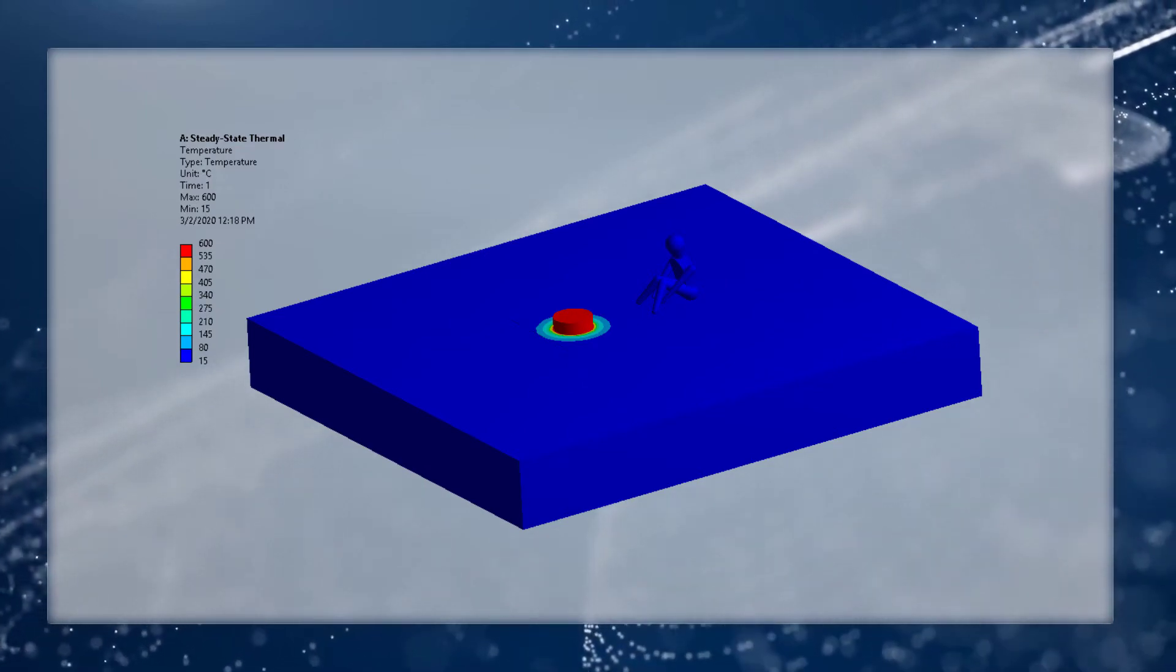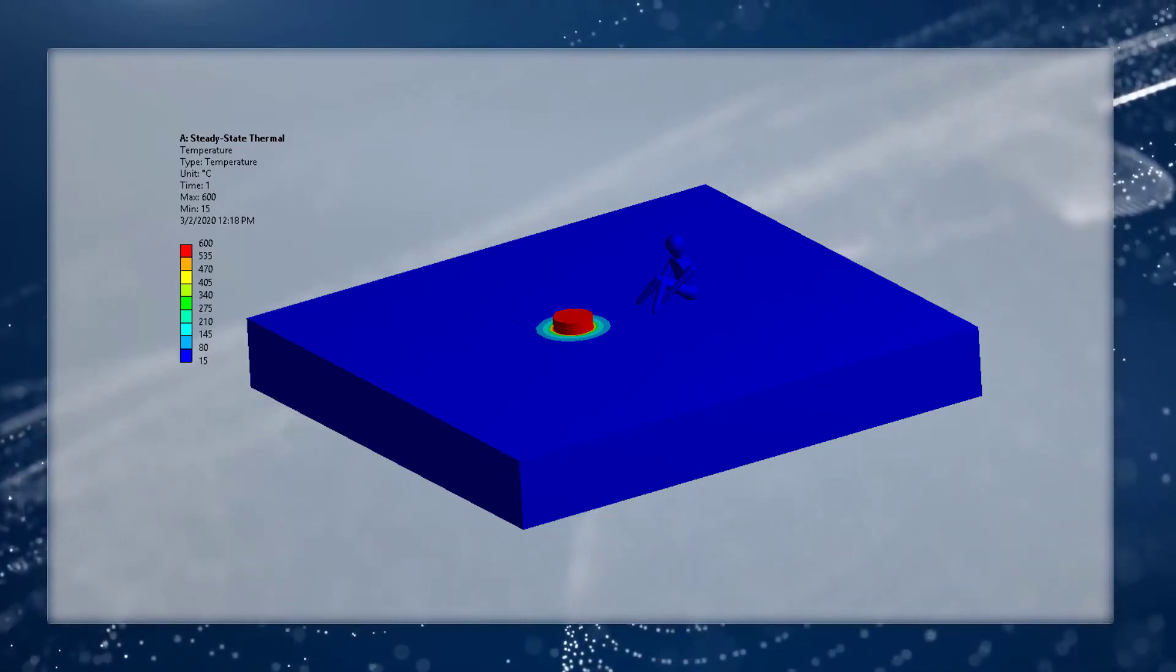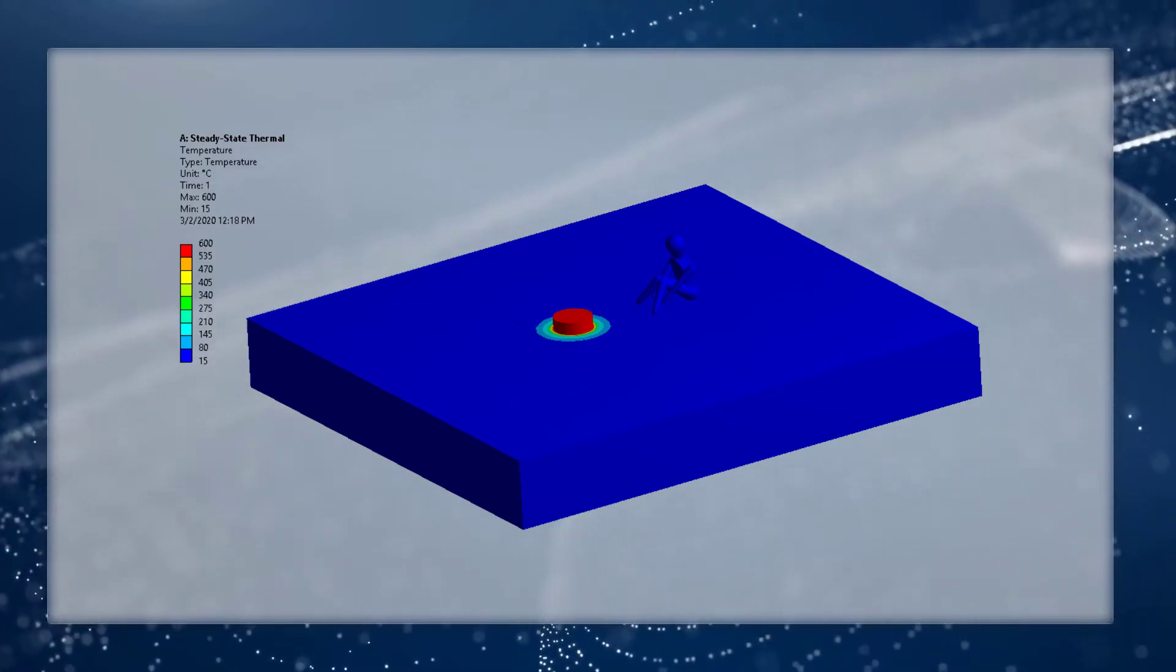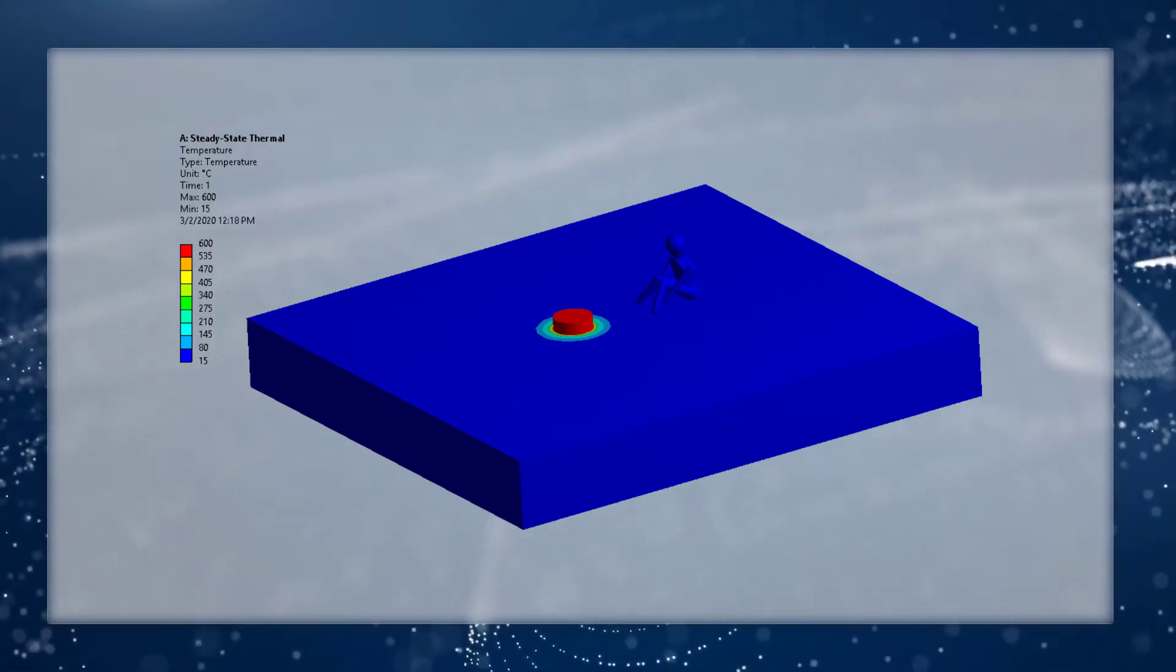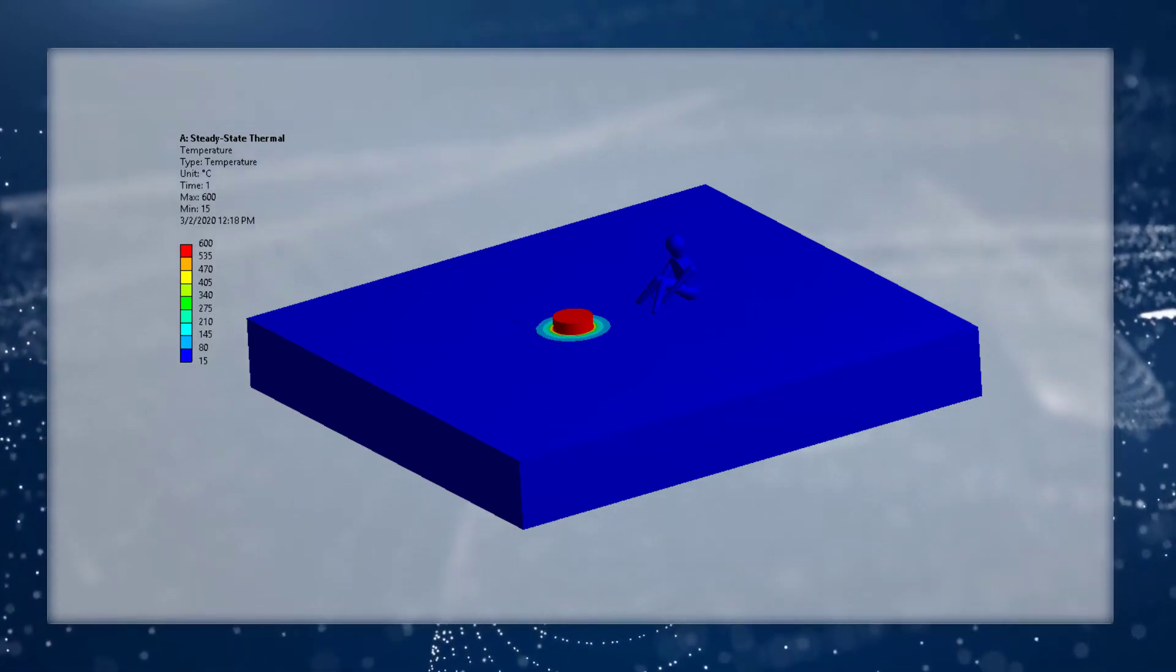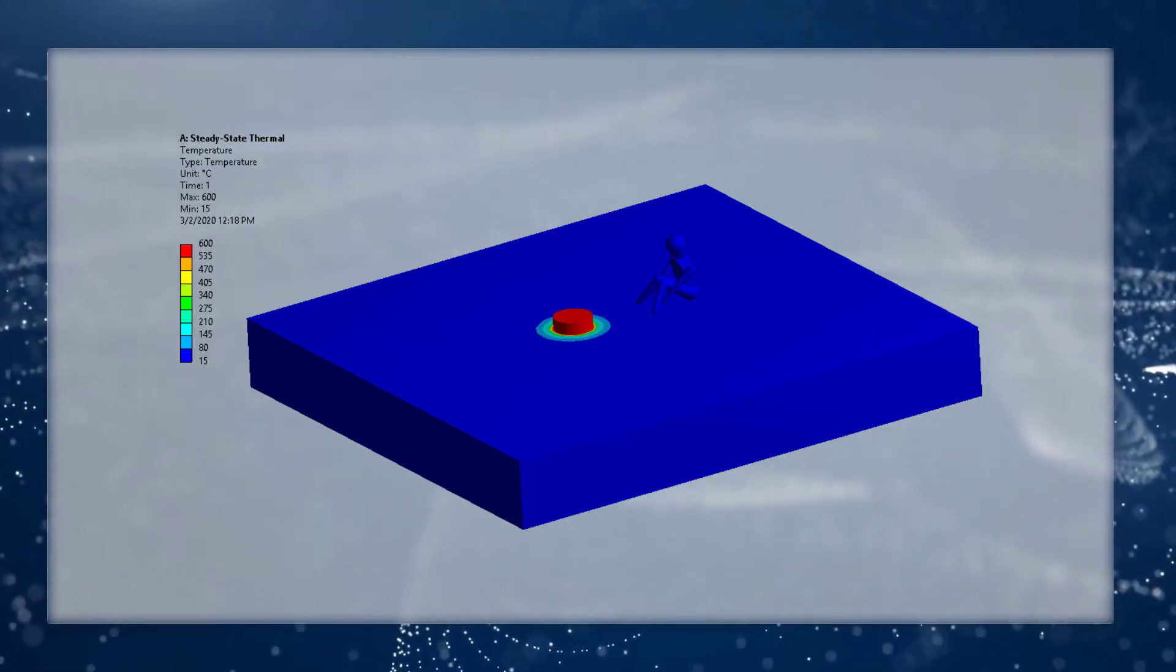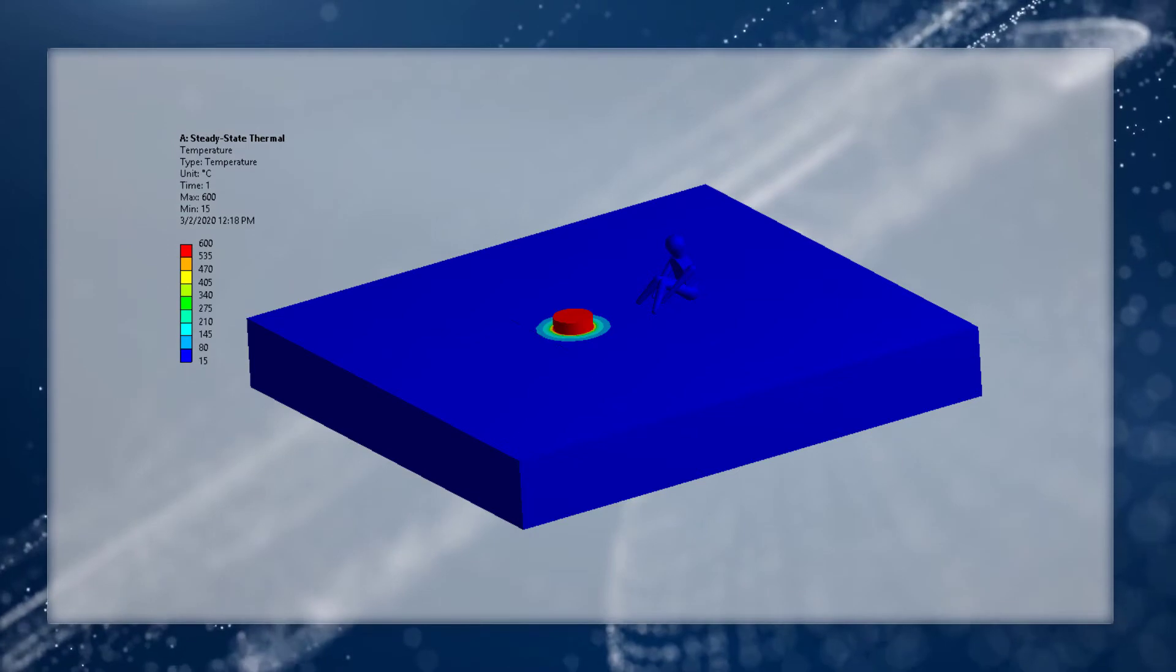Let's first do a temperature contour plot on all the parts. We can see that the burning wood has an imposed temperature of 600 degrees Celsius, while the ground the wood sits on also has a higher temperature. But other than that, we cannot get too much information out of this plot, because the burning wood temperature is so high that all other parts appear as blue in this plot.